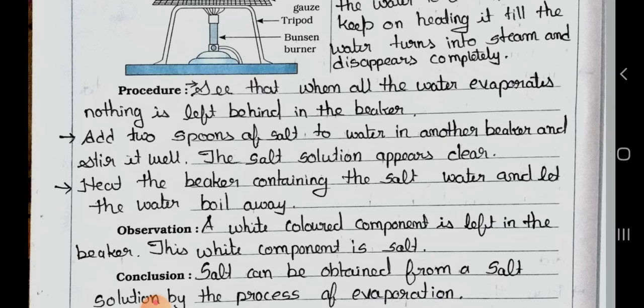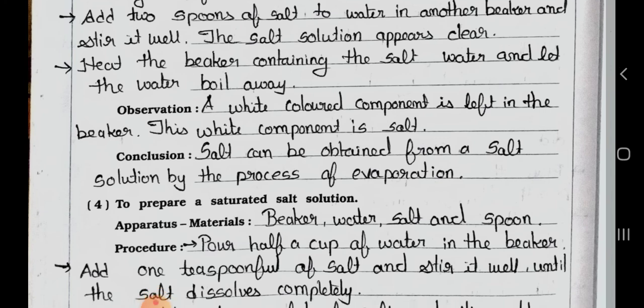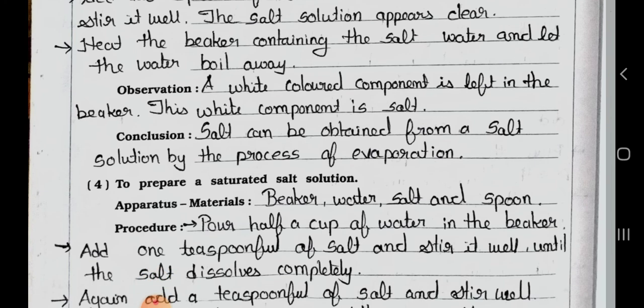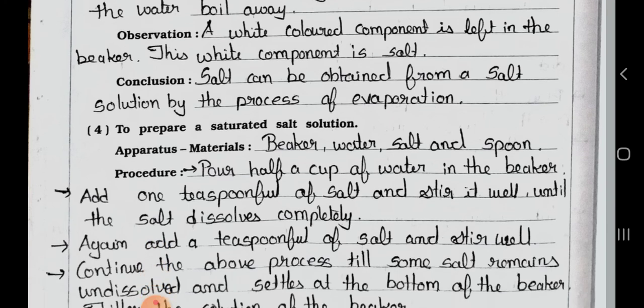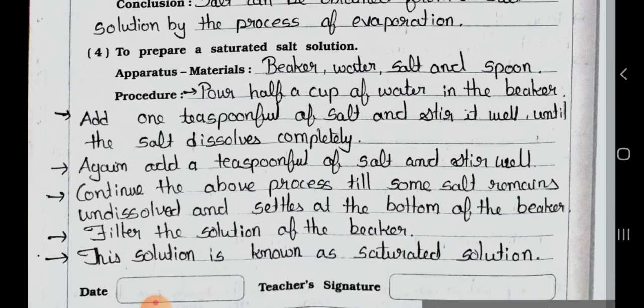Add 2 spoons of salt to water in another beaker and stir it well. The salt solution appears clear. Heat the beaker containing the salt water and let the water boil away. Observation: A white colored component is left in the beaker. This white component is salt. Conclusion: Salt can be obtained from a salt solution by the process of evaporation.